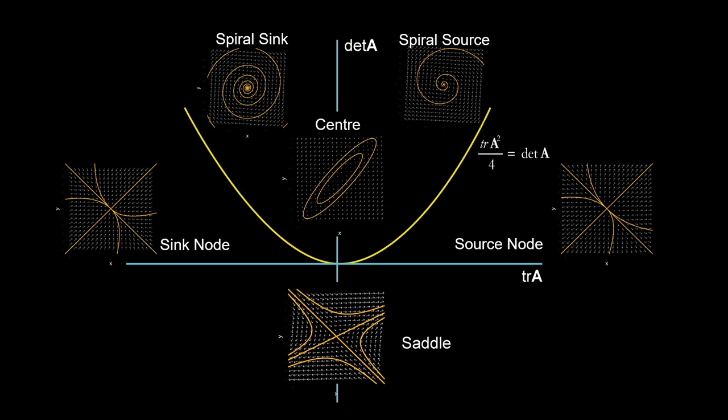Here is the complete trace-determinant plot for a two-dimensional system. This diagram is easy to remember and helps us draw quick conclusions about the possible dynamics in a system. Take your time and make sure that you understand this plot very well.